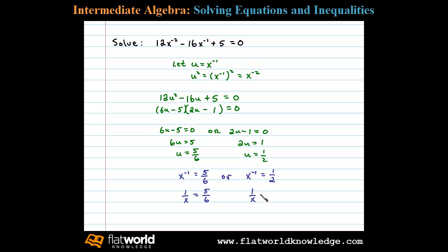Certainly x cannot be equal to 0 here, and with this we can see then that x equals 6 fifths, or x equals 2 over 1, or just 2. And these are the two solutions to the original quadratic-like equation.